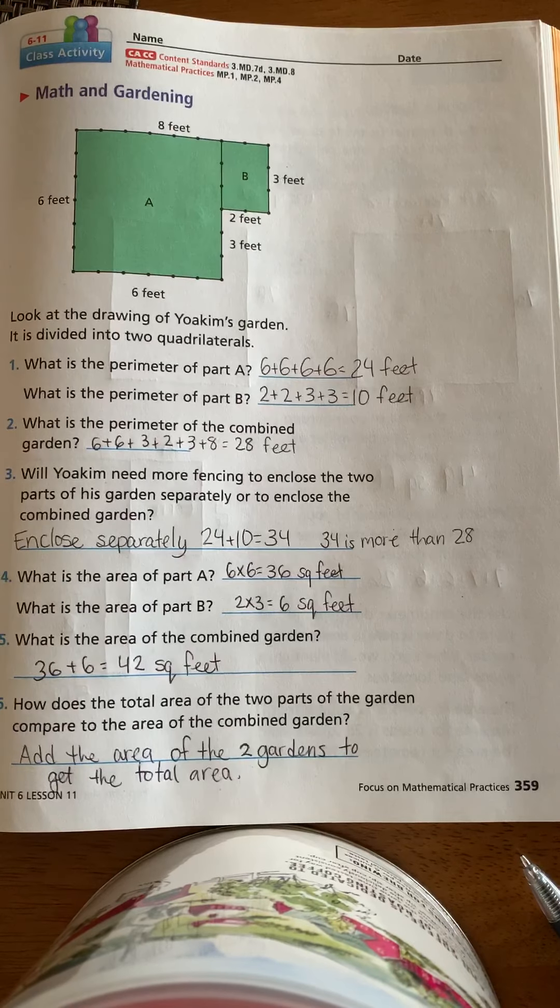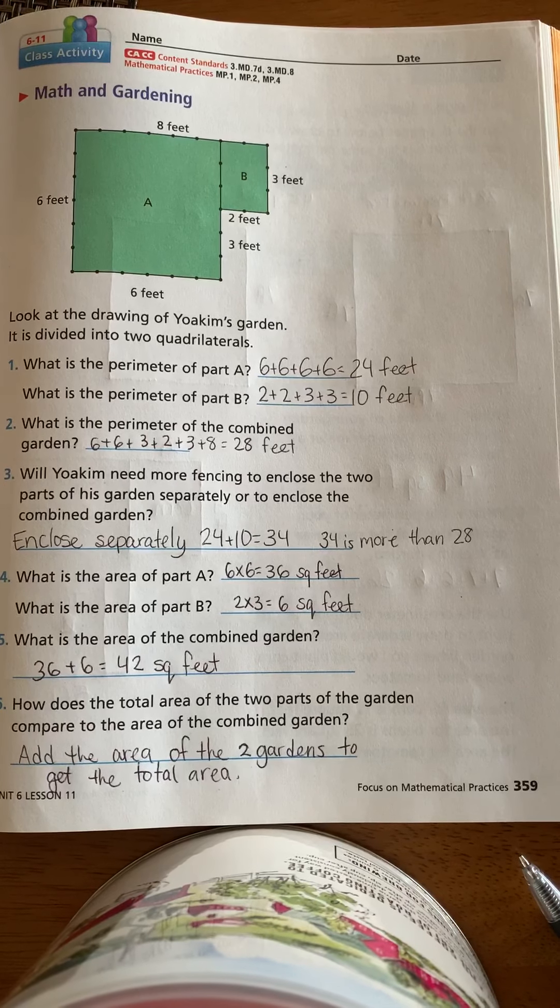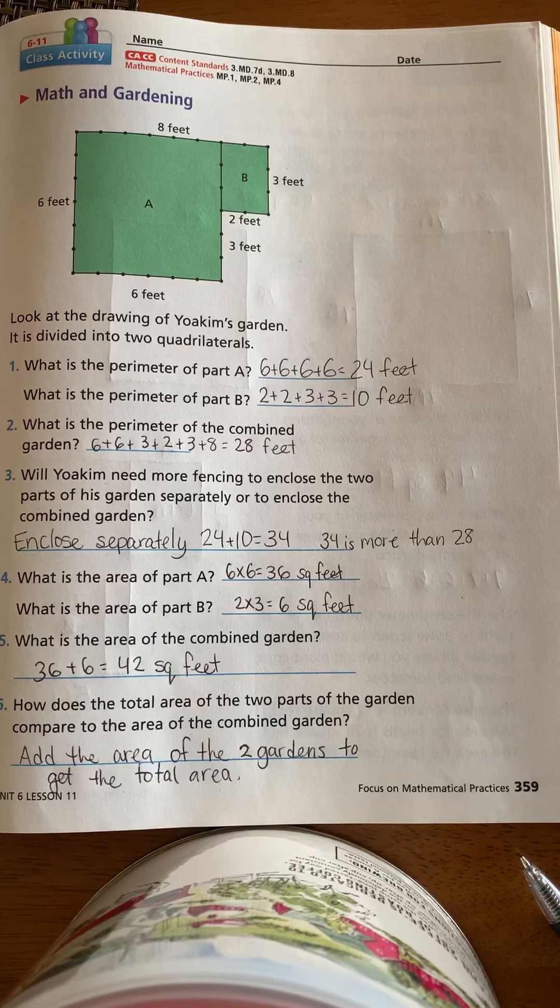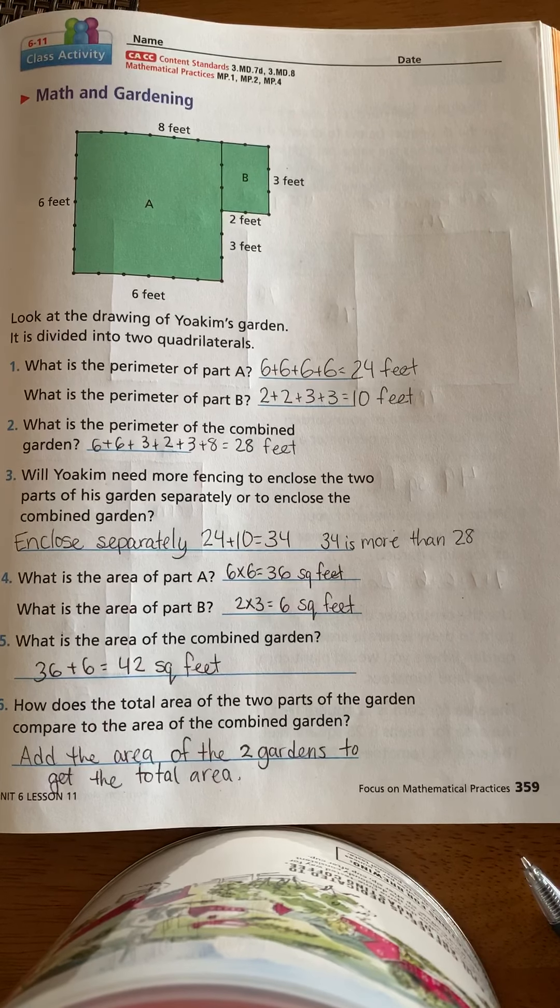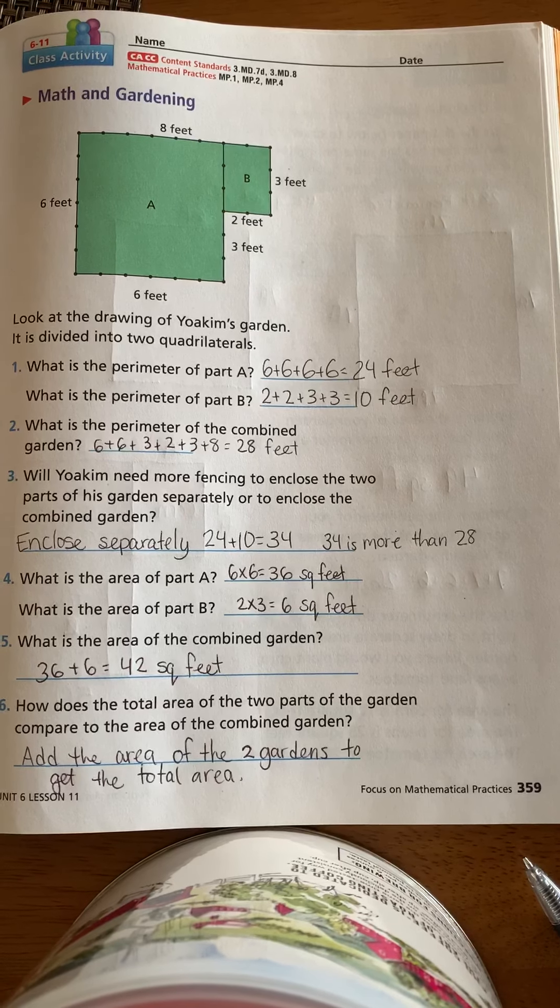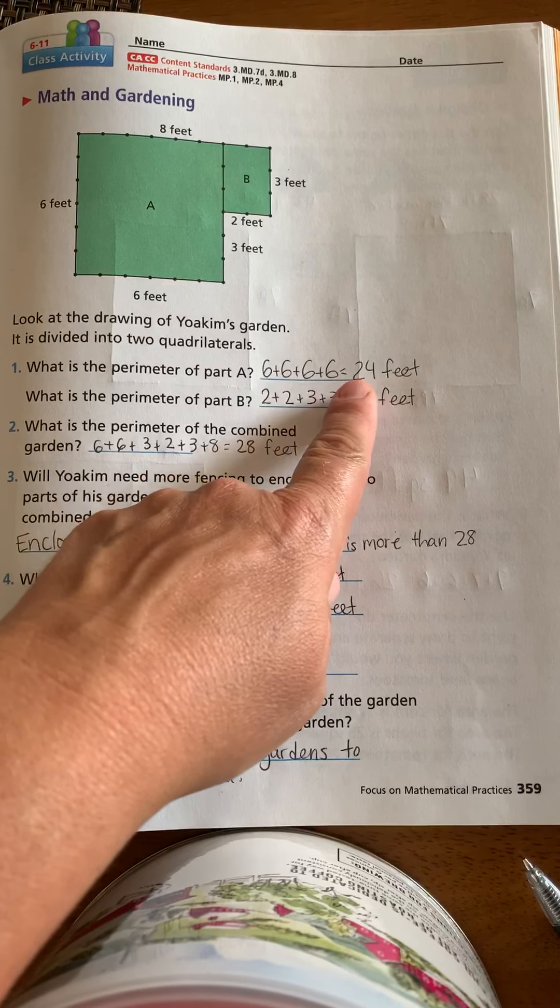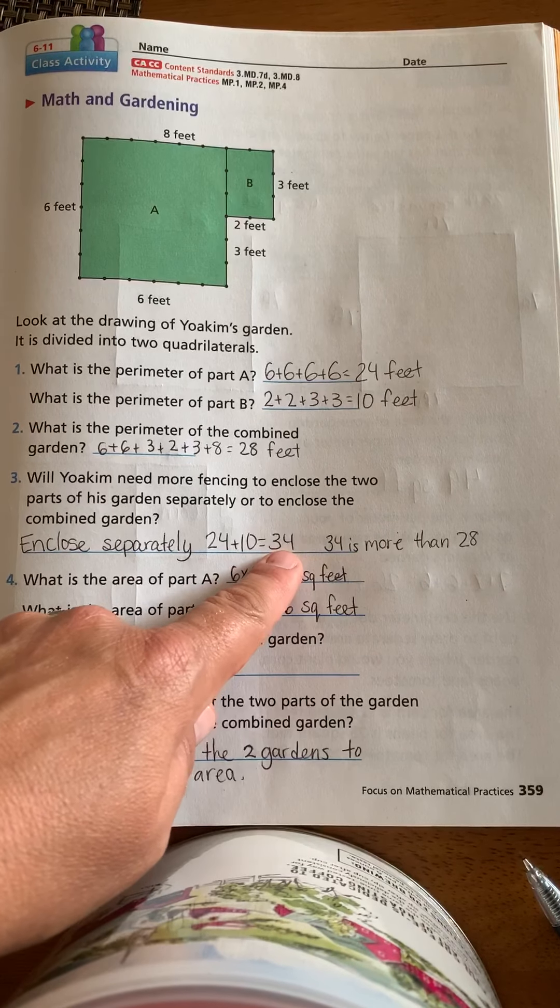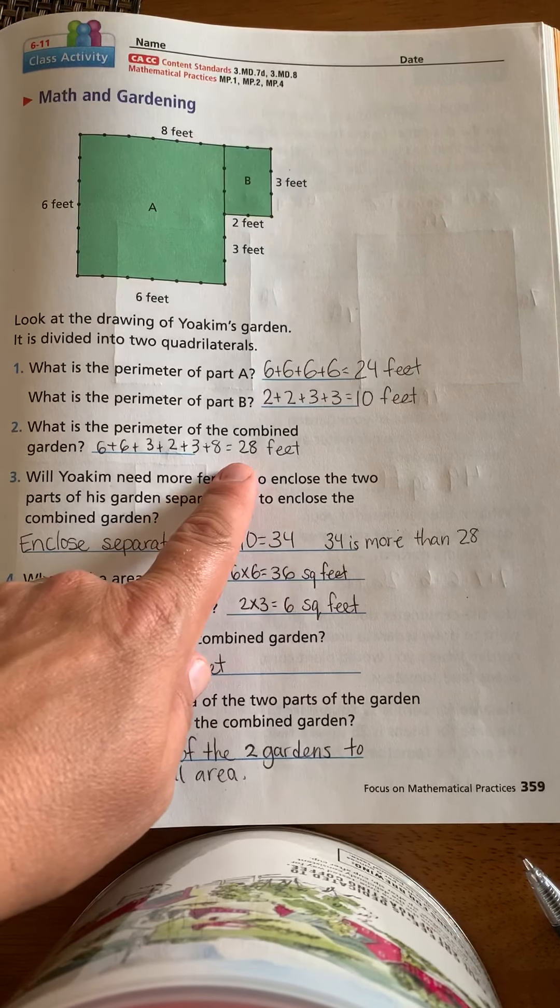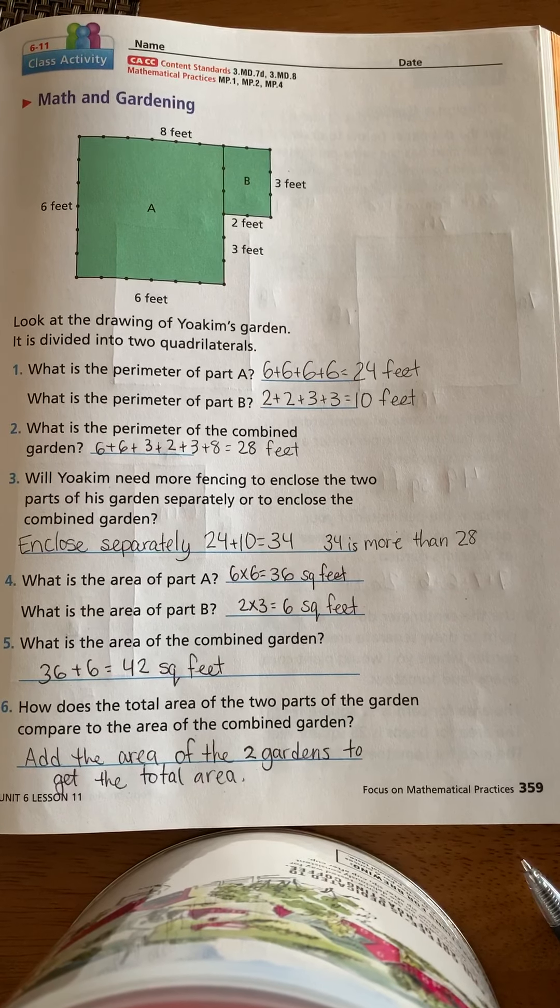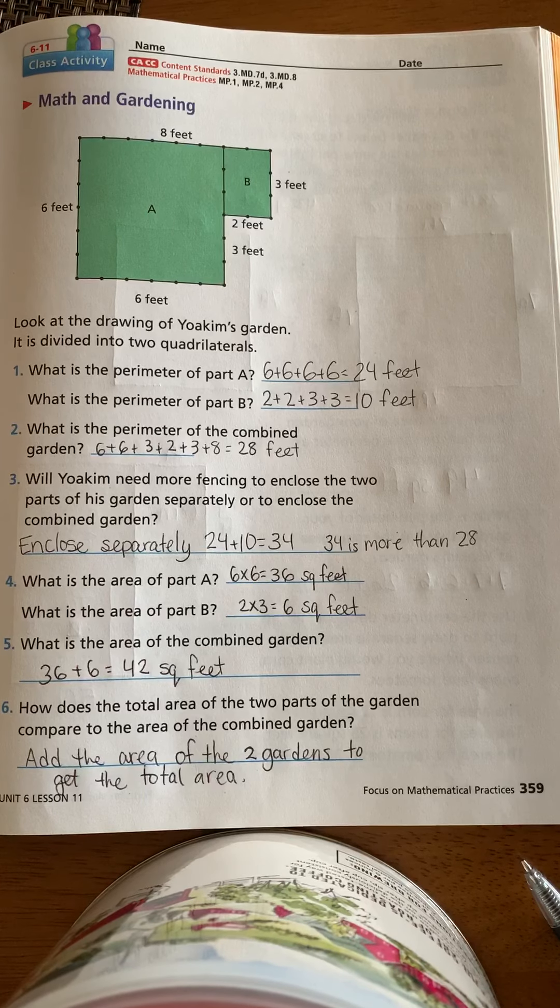Number three, will Joaquin need more fencing to enclose the two parts of the garden separately or to enclose the combined garden? So he would need more to enclose separately because separately it's 24 for the one plus 10 for the other. So he would need 34. And then for combined, it's 28. So 34 is more than 28. So enclosing it separately would require more fencing.